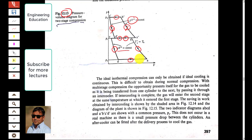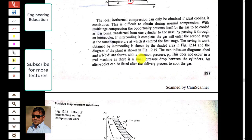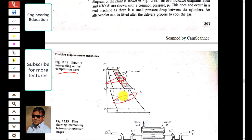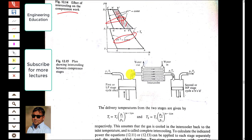If intercooling is included between stages, these processes can be shown on the PV diagram. This illustrates the effect of intercooling on compression work. In the second stage, the area A''-B''-B'-A' represents the intercooling work on the PV diagram — this work is reduced for the second compressor. So less work is required for the second stage (A'-B'-C'-D'), and due to intercooling, work in the second stage is reduced.